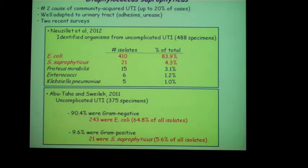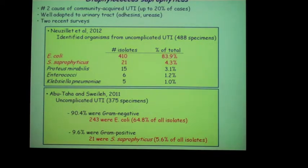Staphylococcus saprophyticus is the number two cause of community-acquired UTI. The textbook says up to 20% of cases, but when you look at the data it's usually around 5% to 10%. Two surveys show E. coli is number one in both cases, and Staphylococcus accounts for about 5%. Other organisms listed — Proteus mirabilis and Klebsiella are Enterobacteriaceae — and then Enterococcus, a gram-positive organism, which will be discussed shortly.